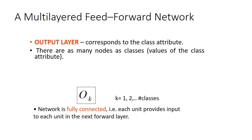The next is output layer, corresponding to the class attribute. There are as many nodes as classes. If there are two classes then there are two nodes. If there are three classes then there will be three nodes in the output layer. So it depends upon how many classes you have in the problem statement.